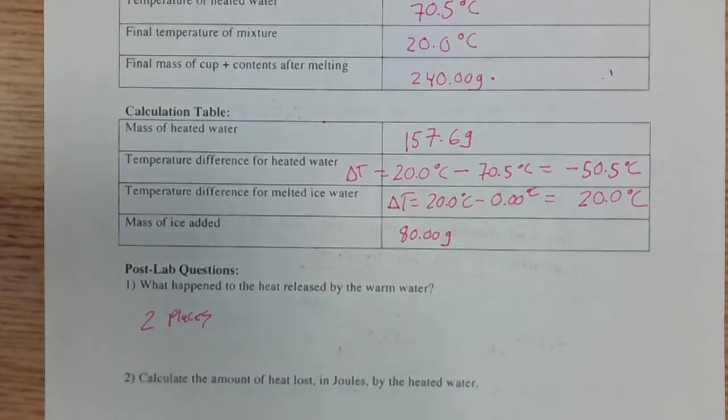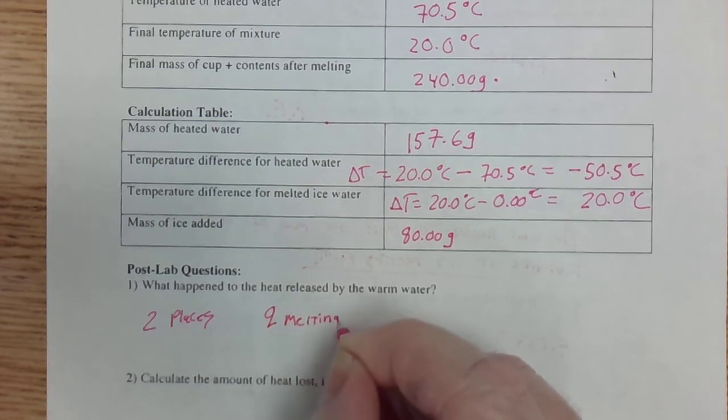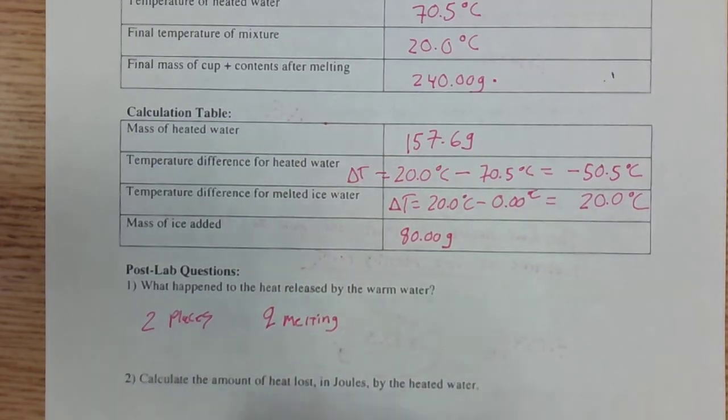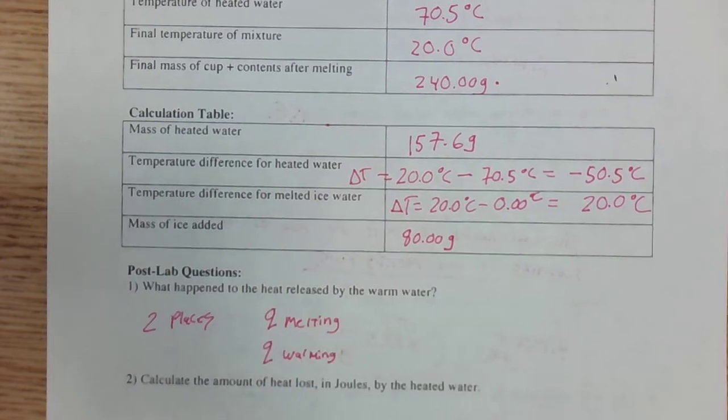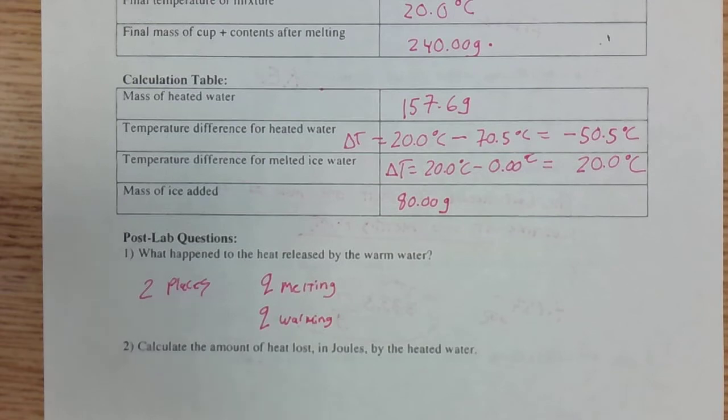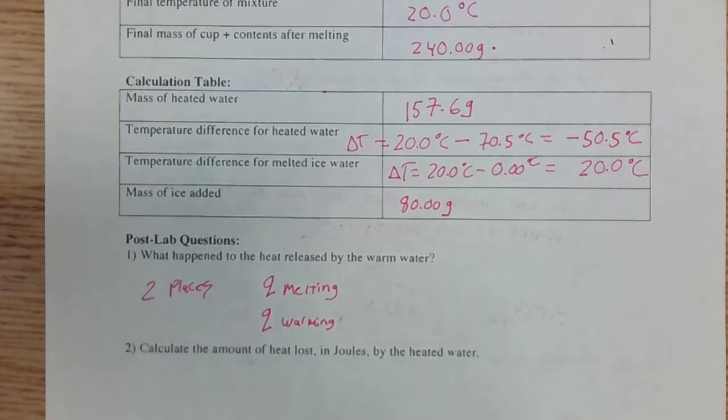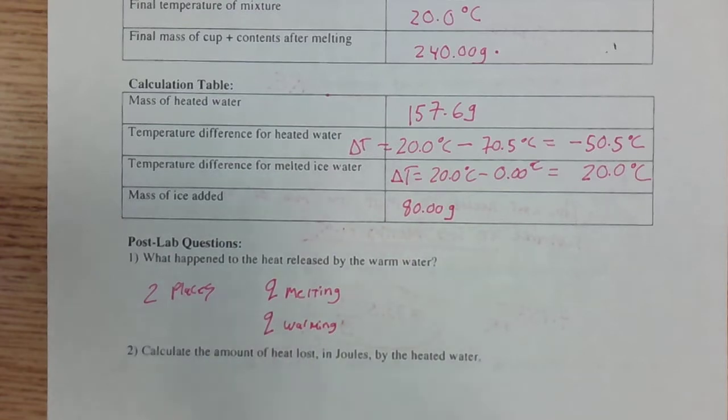The first thing it did, we'll call it Q melting. The heat that was necessary to melt the ice cube. And then Q warming. Because when the ice cube melts, you end up with a bunch of liquid water that's at 0 degrees Celsius. So we take that cold water up to the 20 degrees Celsius. So we'll call that warming.